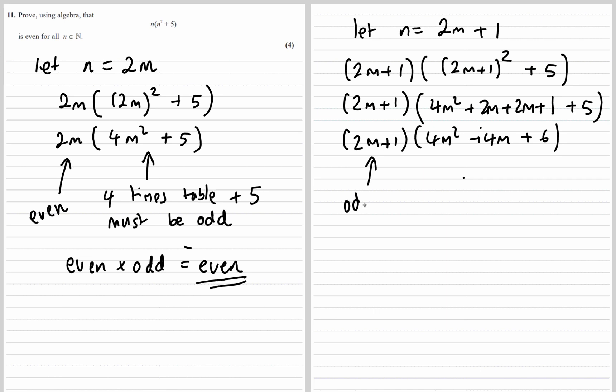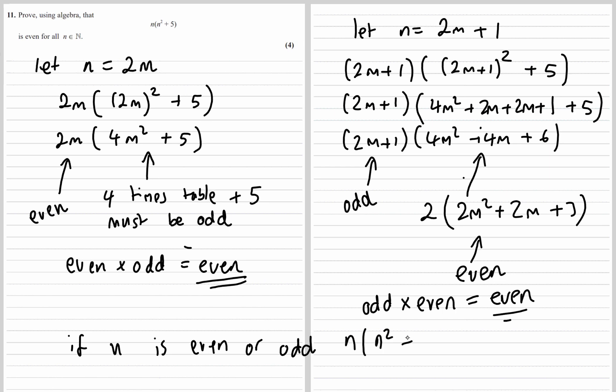So 2m plus 1 is an odd number. And 4m squared plus 4m plus 6, that's an even number. We can write it as 2 times 2m squared plus 2m plus 3. So it's even. And an odd times an even is even. So if n is even or odd, n times n squared plus 5 is even for all natural numbers.